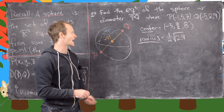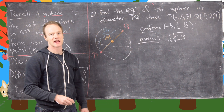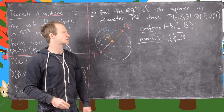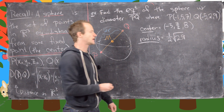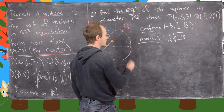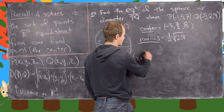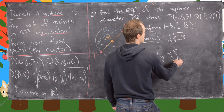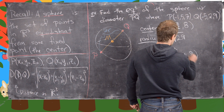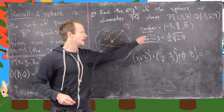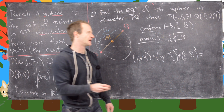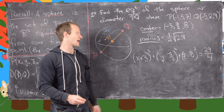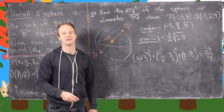We determined the center is (−3, 7/2, 8) and the radius is (1/2)√29. So the equation of the sphere is (x + 3)² + (y − 7/2)² + (z − 8)² = ((1/2)√29)², in other words, 29/4. That's the equation of this sphere, and that's the end of this video.